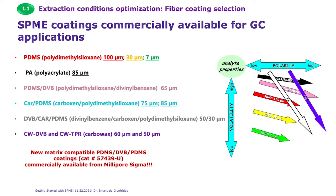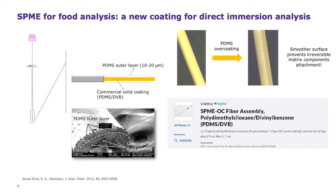For example, polydimethylsiloxane is a sorbent usually used for hydrophobic molecules, while polyacrylate is often used for polar molecules. Besides PDMS and polyacrylate, we have sorbents that include sorbative particles such as divinylbenzene and carboxen. This type of SPME extraction phase allows tuning of extraction coverage based on molecular weight and volatility. We now also have commercially available a new type of extraction phase that is resistant to biofouling, called the matrix-compatible or overcoated fiber, which consists of PDMS-DVB sorbents overcoated with a thin and smooth layer of polydimethylsiloxane.